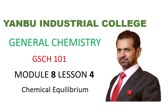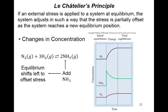Le Chatelier was a French scientist who put forward this principle. It explains that if a system at equilibrium is disturbed by external forces — change in concentration, pressure, temperature, or a catalyst — these four factors could affect the equilibrium state. If any of these factors change, the system will try to adjust so that the stress is partially offset as the system reaches a new equilibrium position.